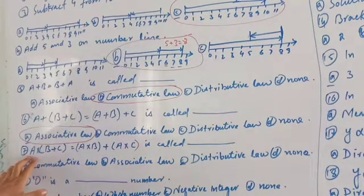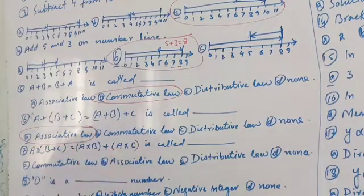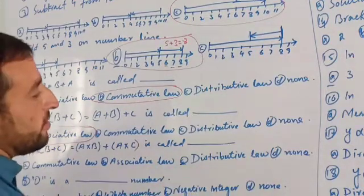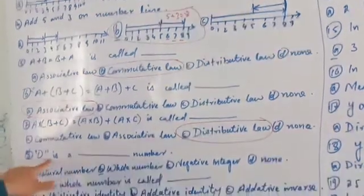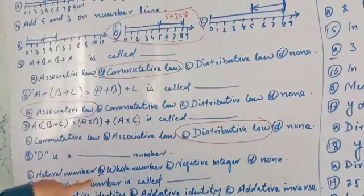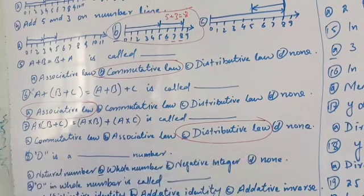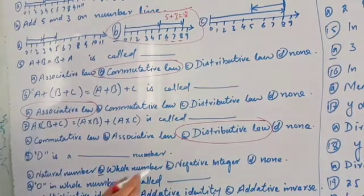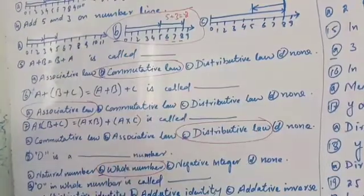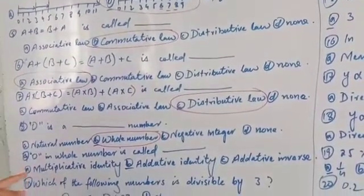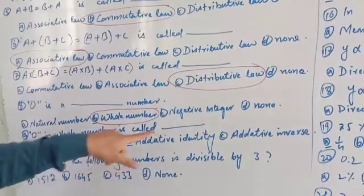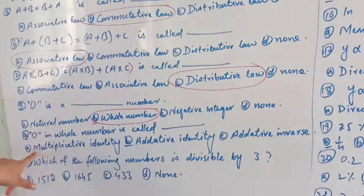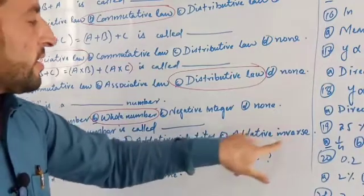Where b and c are added together, then multiplied: a times b plus a times c — the same result. So commutative, associative, and distributive laws are explained. Then the distributive law is shown again, and next is the Multiplicative Identity and Identity Inverse.